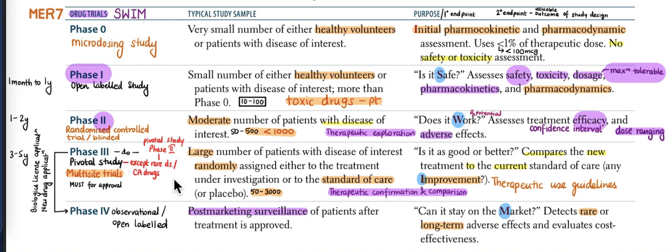In Phase 3, a large number of patients with the disease of interest are randomly assigned either to the treatment under investigation or to the standard of care or placebo — this is how you measure improvement by comparing and contrasting. Phase 0 uses healthy volunteers, Phase 1 can include patients with the disease, Phase 2 has a moderate number of patients, and Phase 4 is post-marketing surveillance.